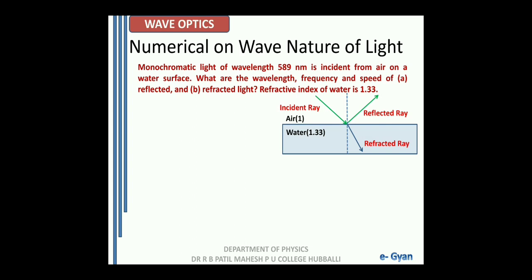Now let us try to picturize the problem. The ray is incident on the water surface, so some part of the light gets reflected and some part of the light gets refracted. Now we know the refractive index of air is 1 and the refractive index of water as given is 1.33. Taking these things into account, let us try to find the wavelength, frequency, and speed.